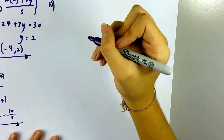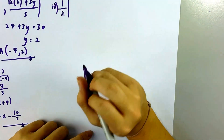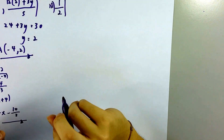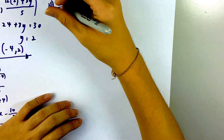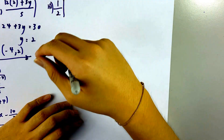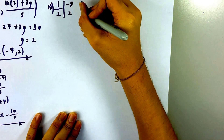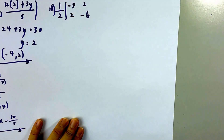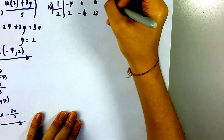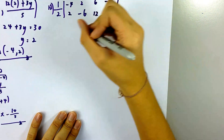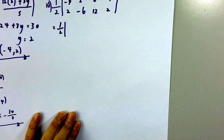Now we go to part (iii): the area. In coordinate geometry, the area formula is one half times the modulus — the modulus removes any negative sign. We write all the coordinates into the modulus. The triangle is ACD, so we put the coordinates of A first: (negative 4, 2), then D: (2, negative 6), then C: (6, 12), and come back to A again: (negative 4, 2).